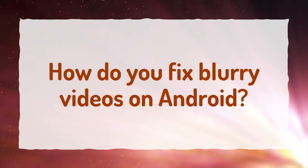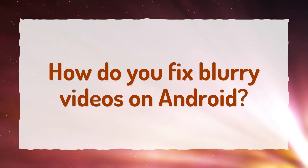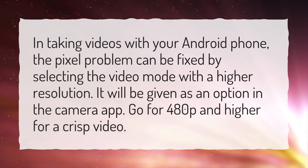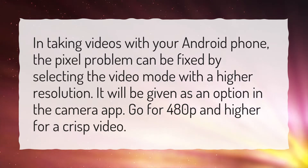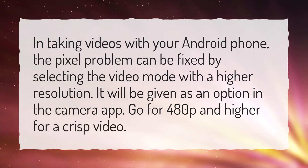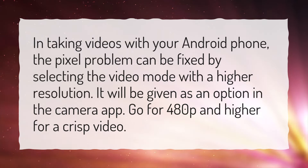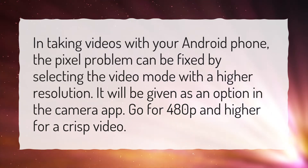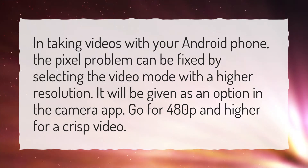How do you fix blurry videos on Android? In taking videos with your Android phone, the pixel problem can be fixed by selecting the video mode with a higher resolution. It will be given as an option in the camera app. Go for 480p and higher for a crisp video.